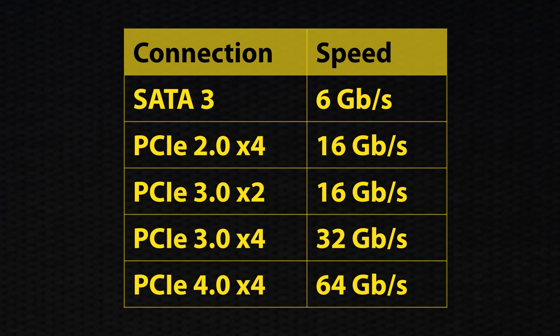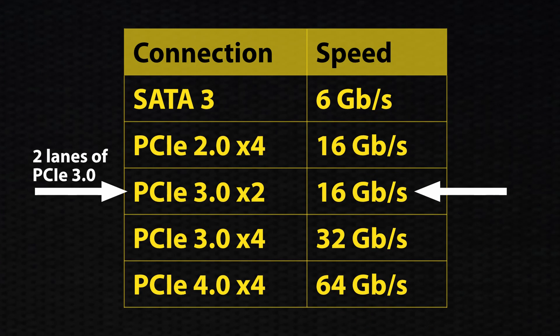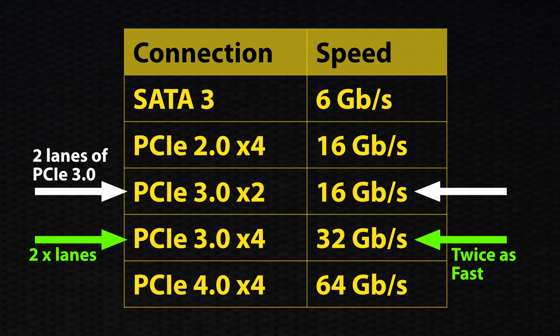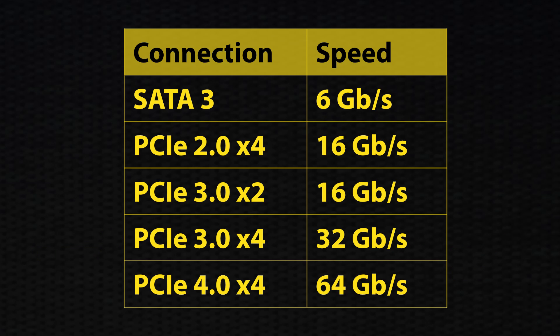You can see the relative speeds of the various M.2 interconnection types in this table. PCIe 3.0 x2 means two lanes of PCIe 3.0, so PCIe 3.0 x4 would be twice as fast because it uses twice as many lanes. SSDs cannot always take advantage of the extra speed offered by a given connection, especially with PCIe 4.0 x4. Let's look at some actual M.2 modules and slots.